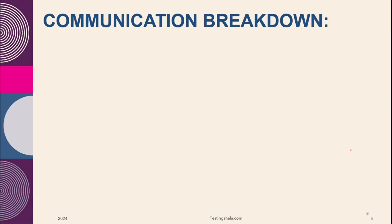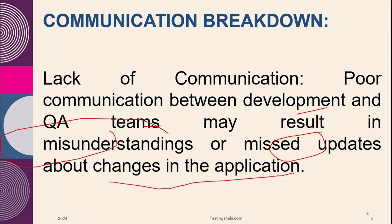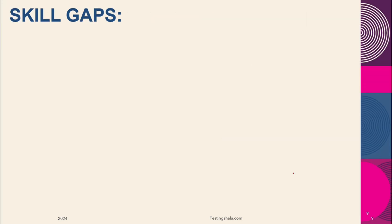The next reason is communication breakdown. If there is no proper communication between the development team and the QA team, that leads to a lot of misunderstanding or missing updates from the development team regarding changes in the application — and in that situation also, we may anticipate missing defects.